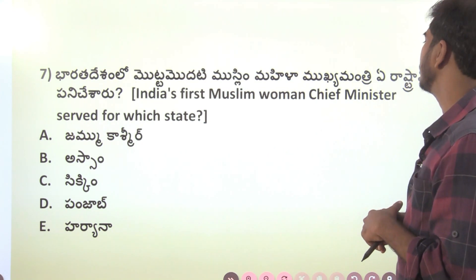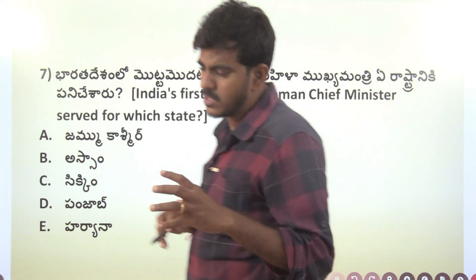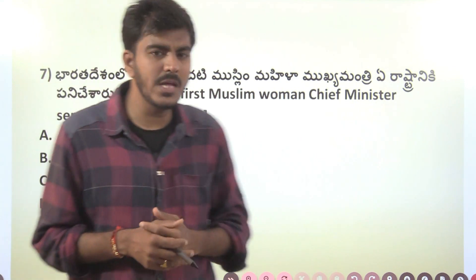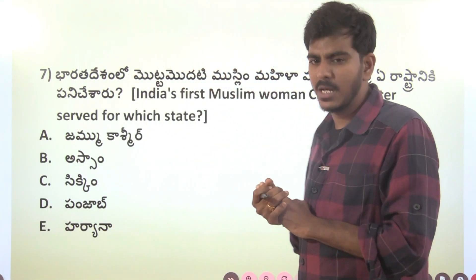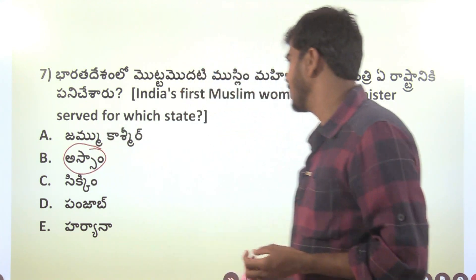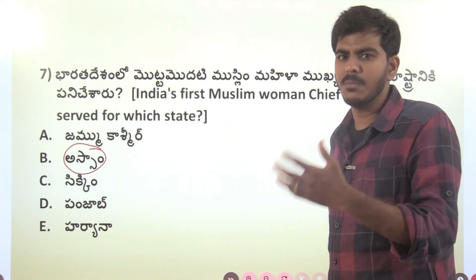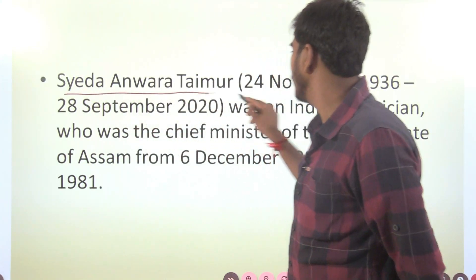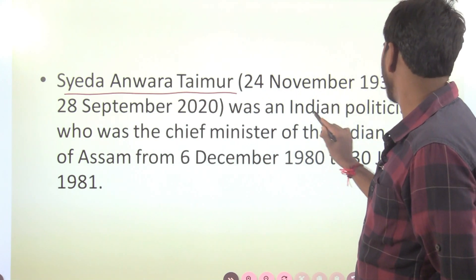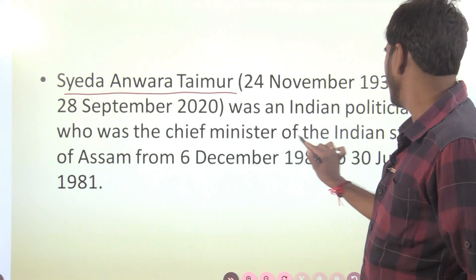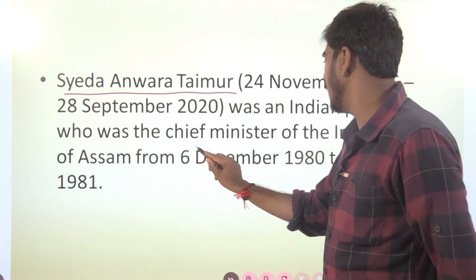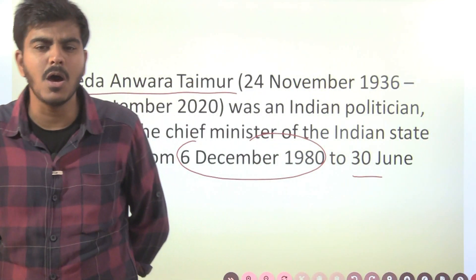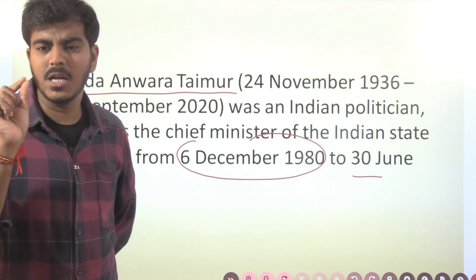In India, the most important thing regarding special provisions covers Jammu Kashmir, Assam, Sikkim, Punjab and Haryana — the answer is that Jammu Kashmir has special status. From 6th December 1980 to 30th June 1981 was significant, and Jammu and Kashmir's status is well known today.